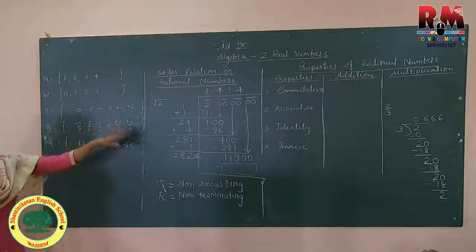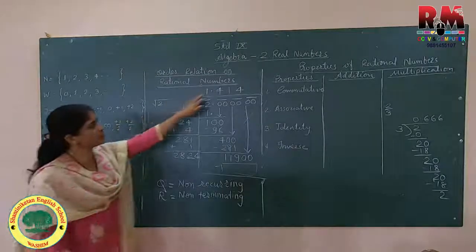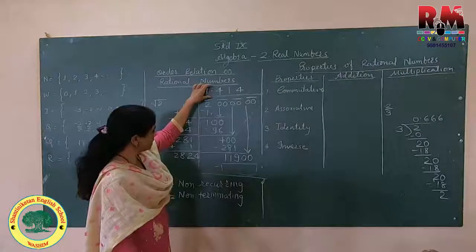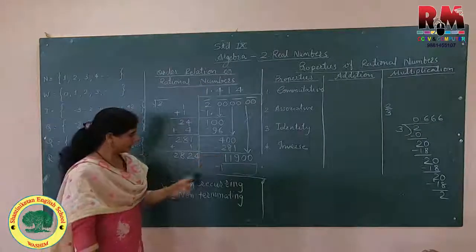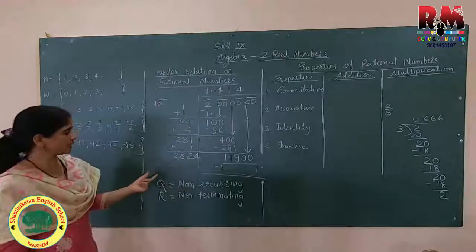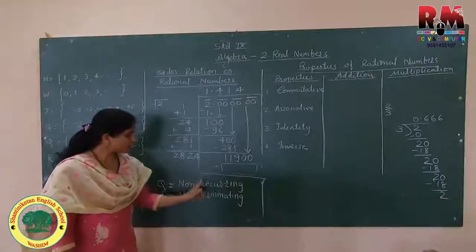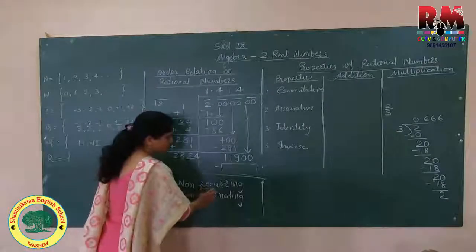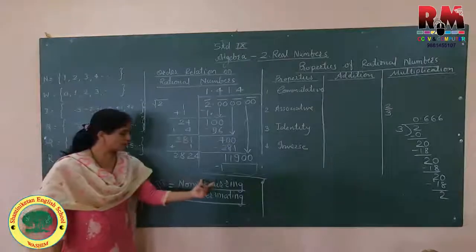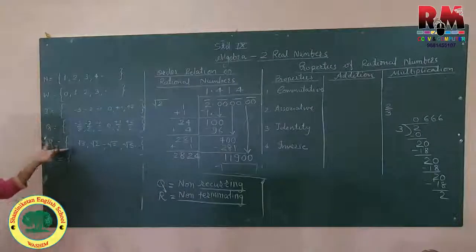We have seen two definitions of rational numbers. Irrational numbers mean no number is repeating again and again in the same order — that is called non-recurring — and the division is also unending, so it is non-terminating. The difference between rational and irrational numbers: in rational numbers the quotient is recurring and non-terminating; in irrational numbers the quotient is non-recurring and non-terminating.